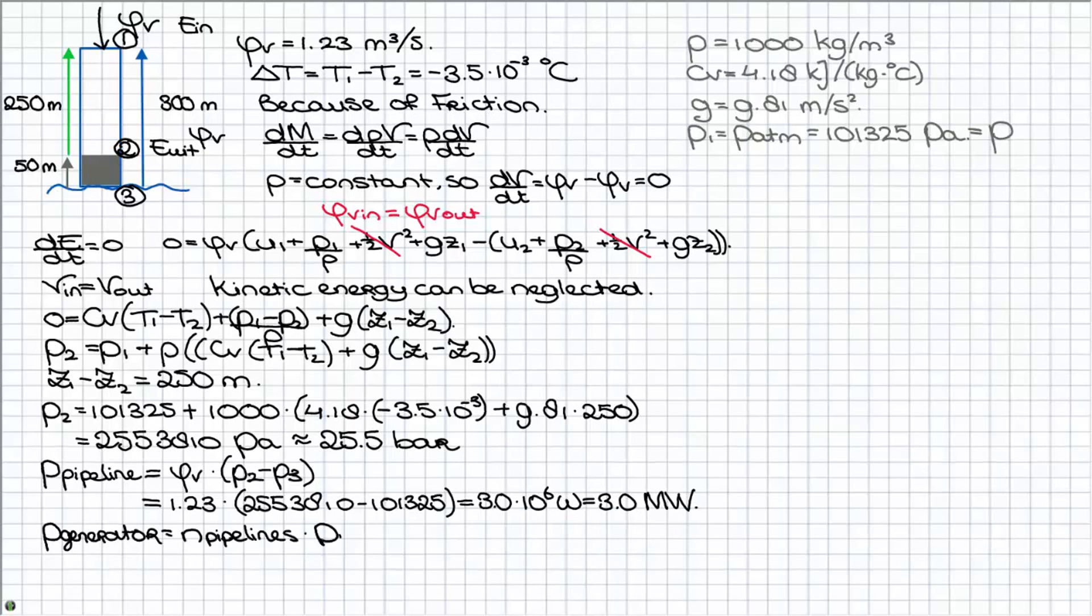We know one generator contains 100 pipelines so just multiplying the electrical power of one pipeline by this value will give you the power of the generator.